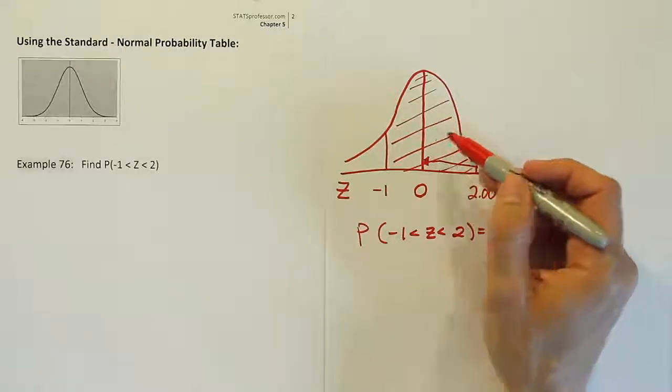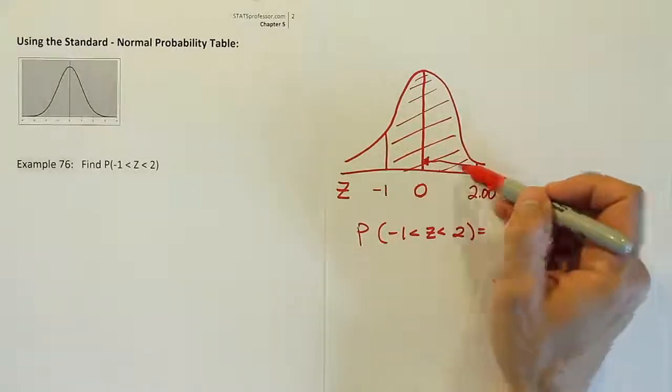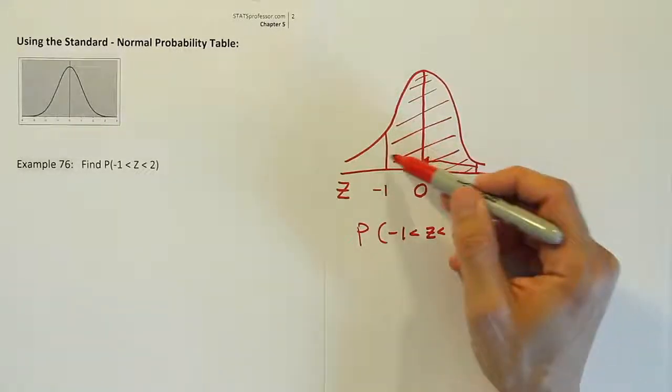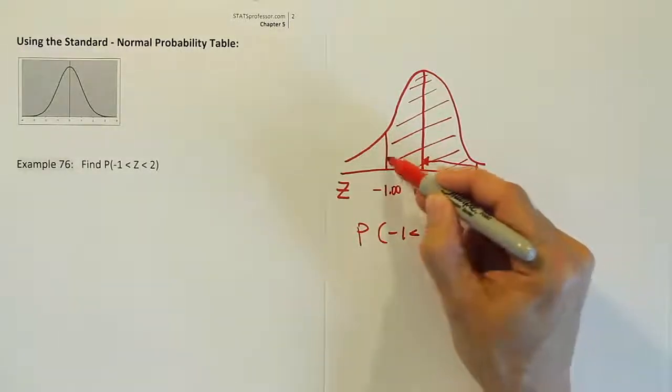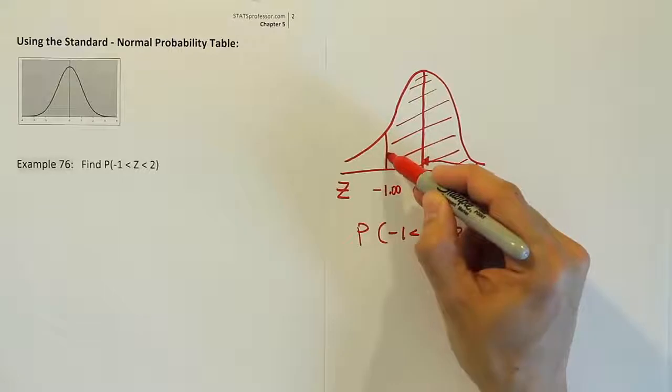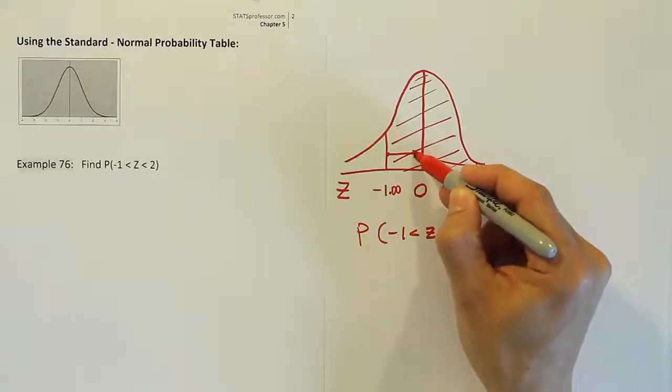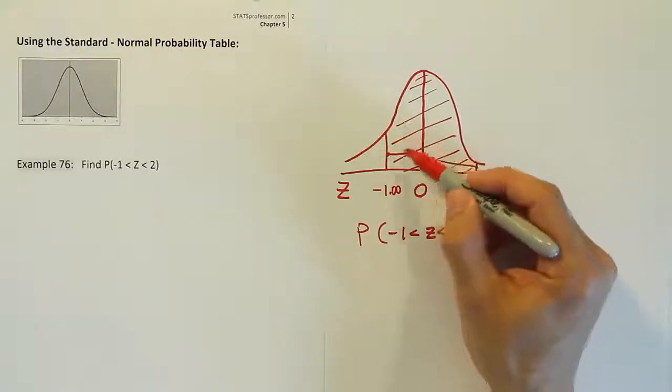Now, that's part of what we want, right? We want that shaded area from here to here. But we also want this shaded area. Well, if I look up negative 1.00 on the table, it'll give me the area from the number I look up, again, to the center only. So to the center. Well, that will give me this area.